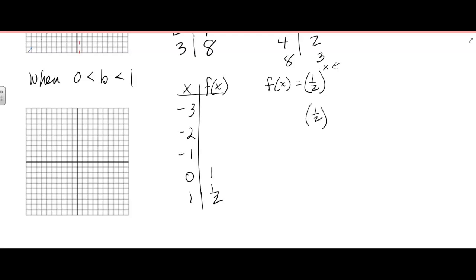But now what happens when we have 1 half to the negative first power? Well, that's going to reciprocal it. So you get 2 to the first or just 2. And then with a negative 2, you're going to get the 4. And with a negative 3, you're going to get the 8. Now, how do those graph? Well, negative 3, 8 is going to be up here. Negative 2, 4. And then we're going to have negative 1, 2, 0, 1, and 1, 1 half. And we get it going like this. It reflects about the y-axis, right? OK, so that's what happens for the function f of x.